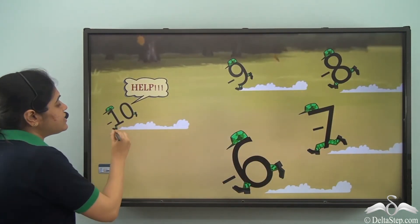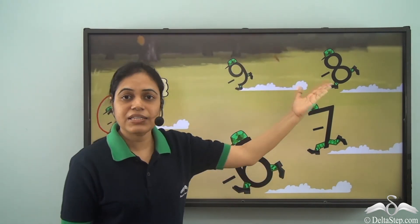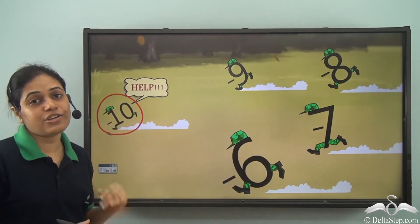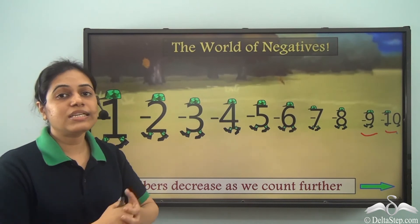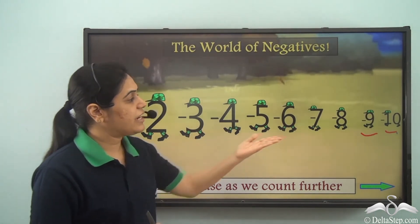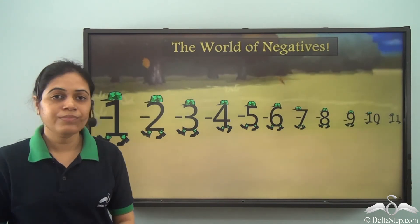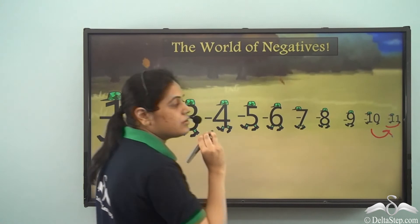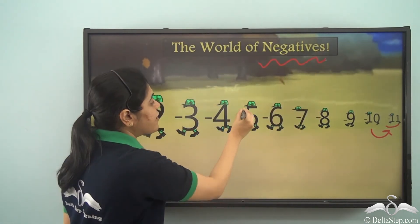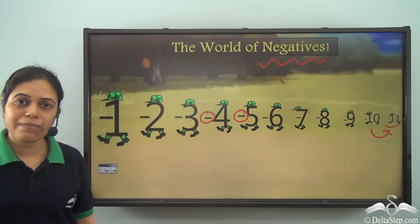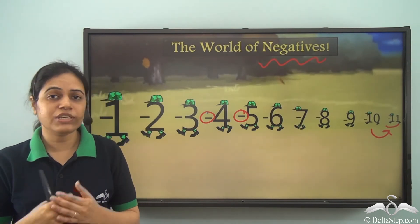We can see negative ten, which is smaller than all these numbers — negative nine, negative eight, negative seven — and they are chasing him and he's running for help. So negative ten is smaller than negative nine because it comes later while we count. Can you tell me what will be the next number after negative ten? It will be negative eleven, and negative eleven will be smaller than negative ten. So in the world of negatives all the numbers have this minus or negative sign in front of them and as we count further the numbers decrease.